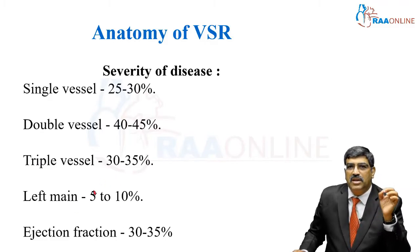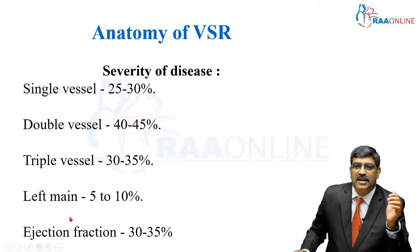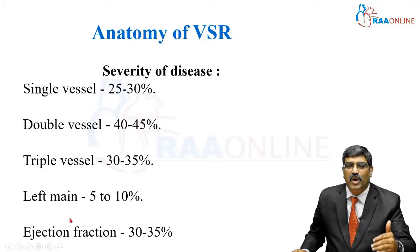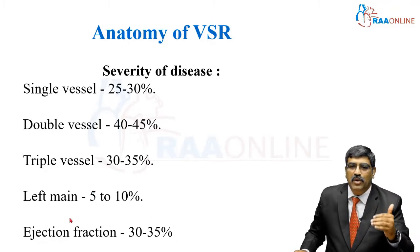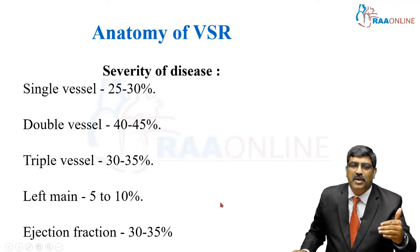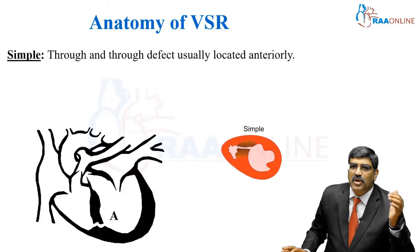But one thing is very common — your ejection fraction will be low due to an acute MI, and your heart might be in cardiogenic shock or congestive cardiac failure.